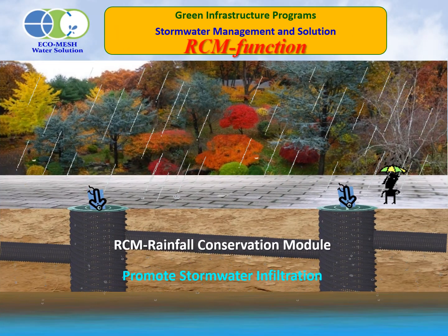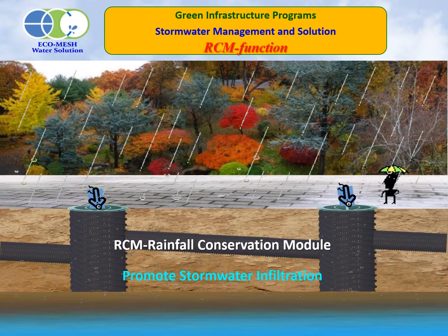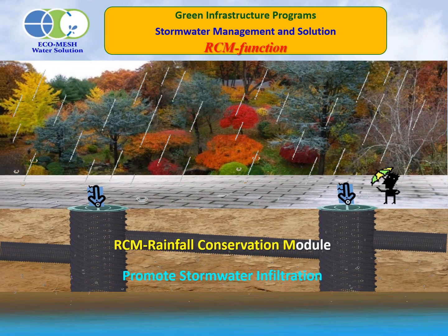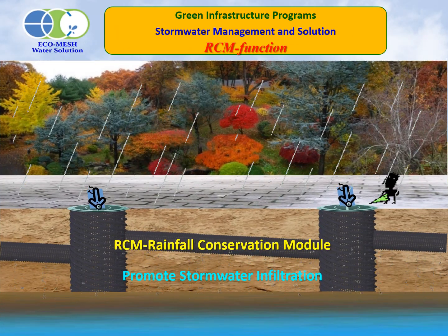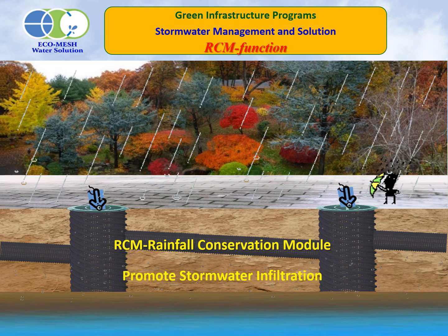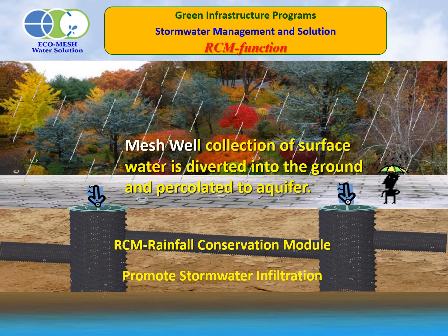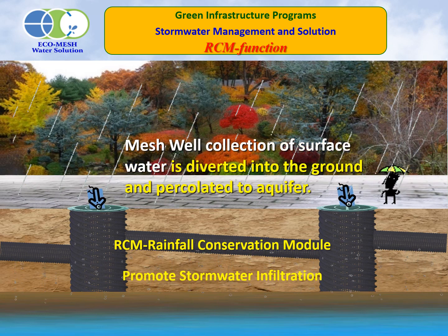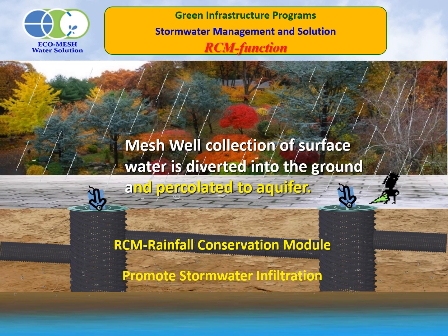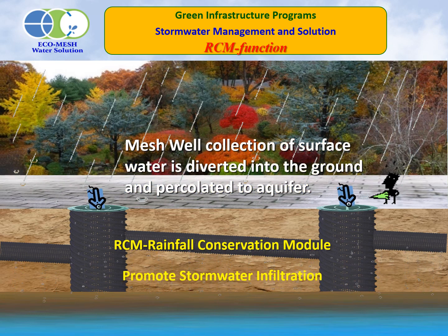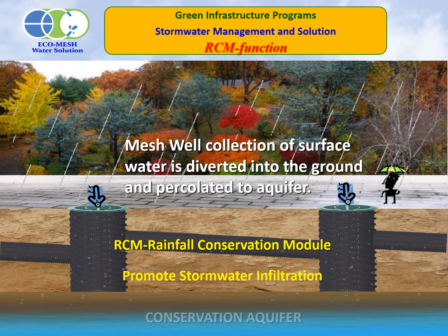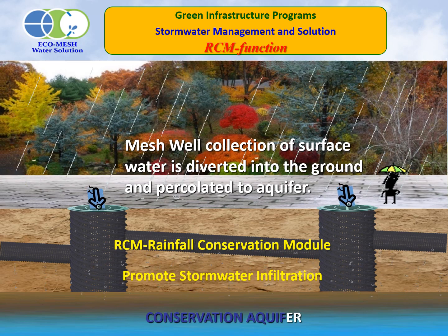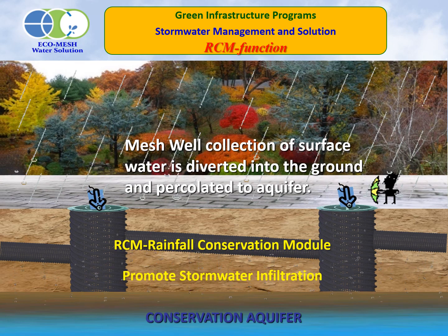The principle of ACM, the Rainwater Conservation Module, is to collect rainfall from the surface first and then make the saturated groundwater infiltrate into the aquifer.